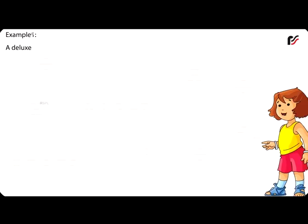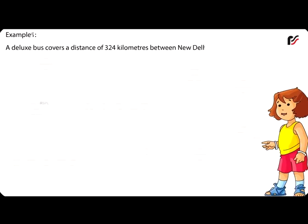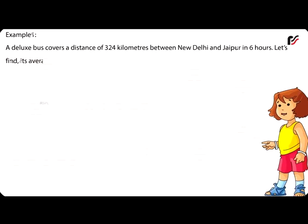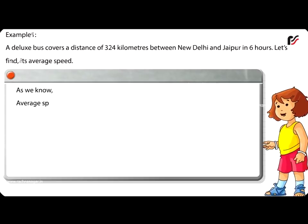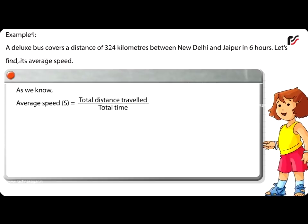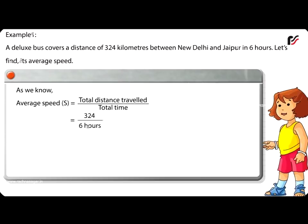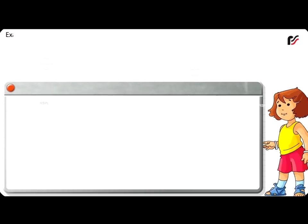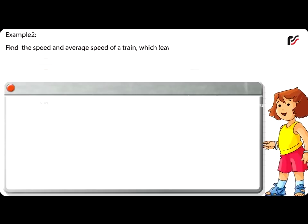Example 1: A deluxe bus covers a distance of 324 kilometres between New Delhi and Jaipur in 6 hours. Let's find its average speed. As we know, average speed (S) is equal to total distance travelled divided by total time. That is 324 divided by 6 hours, which equals 54 kilometres per hour.